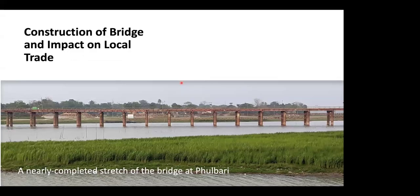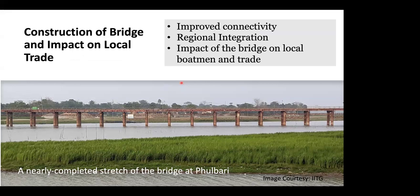An interesting infrastructure development taking place in Dhuburi is the construction of a bridge connecting Dhuburi in Assam to Fulbari in Meghalaya. Positive hopes attached to this bridge include improved connectivity, reduced travel time, and regional integration between Assam and Meghalaya. However, a negative aspect is that once the bridge is operational, there are high chances that trade happening through the river may shift to road-based trade. If this happens, the future of local traders' businesses is at significant risk.